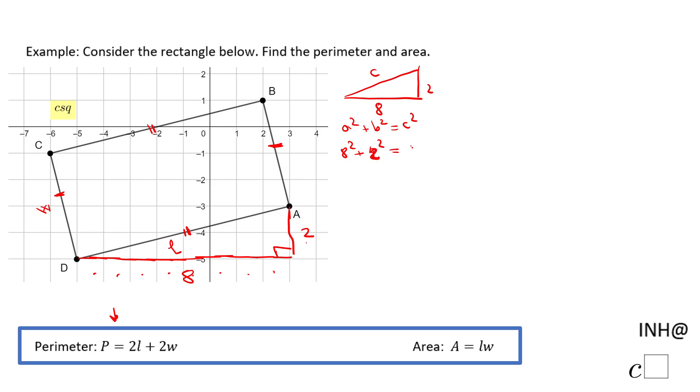Eight squared is 64, plus two squared is 4, equals c². So c² = 64 + 4 = 68.